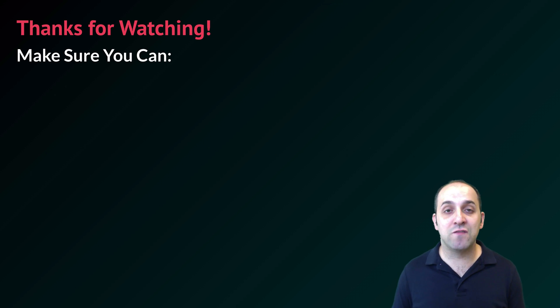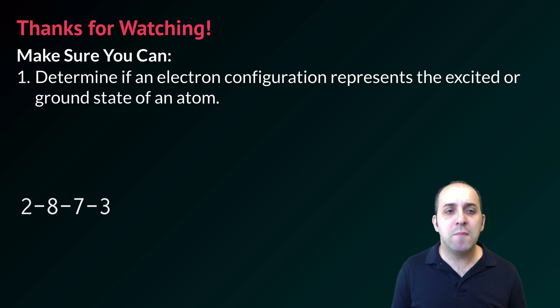Thanks so much for watching this discussion of excited versus ground state electron configurations and how to tell the difference between them. Make sure you can do the following things here at the end. Make sure you can determine if an electron configuration represents the excited state or the ground state of a particular atom.